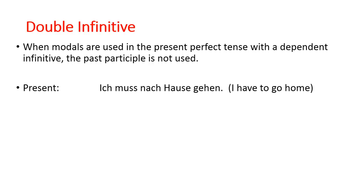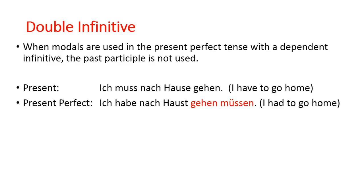In simple present tense, we have a modal and then the infinitive at the end: ich muss nach Hause gehen — 'I have to go home' or 'I must go home.' In the present perfect tense, we want to say 'I had to go home.' So ich muss nach Hause gehen becomes ich habe nach Hause gehen müssen.